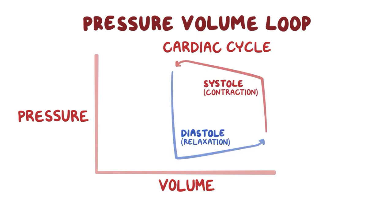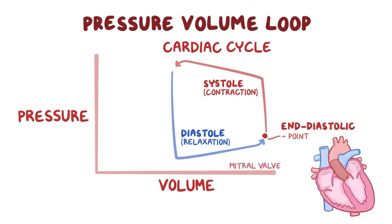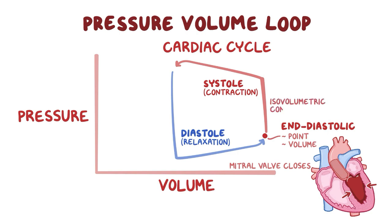The lower right-hand corner is the end diastolic point, and it's the point in the cardiac cycle when diastole is over. At this point, the mitral valve between the left atrium and the left ventricle closes, leaving the left ventricle filled with the maximum volume of blood, called the end diastolic volume. Then systole begins, when the left ventricle contracts to push that blood into the aorta. Ventricular contraction makes the pressure shoot up, but for a brief period of time, both the mitral and aortic valves are closed, so left ventricle volume doesn't change.